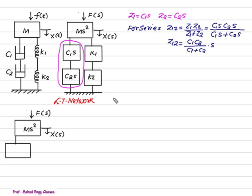So, for series, we have the rule. The resultant impedance is the product divided by the sum. The product is C1s, C2s upon C1s plus C2s. S can be taken common. So, Z12 is C1C2 upon C1 plus C2 multiplied by S. Accordingly, our network is replaced by C1s, C2s by one simple value C1, C2 upon C1 plus C2 multiplied by S.